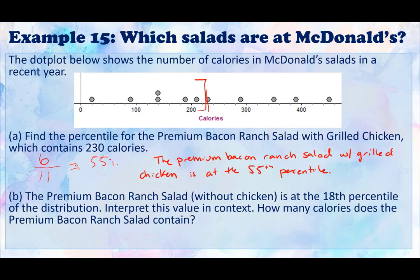So part B, the premium bacon ranch salad without chicken is at the 18th percentile of the distribution. We're going to interpret this value in context and determine how many calories the premium bacon ranch salad contains. Remember, this is the one without chicken. So about 18 percent of the salads have fewer calories than the premium bacon ranch salad. That's what the interpretation in context means.